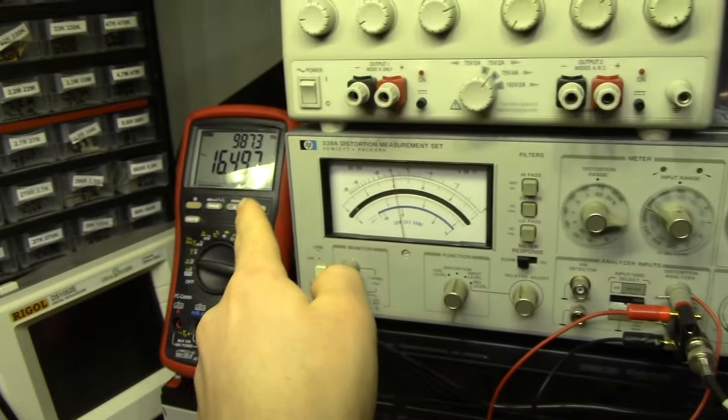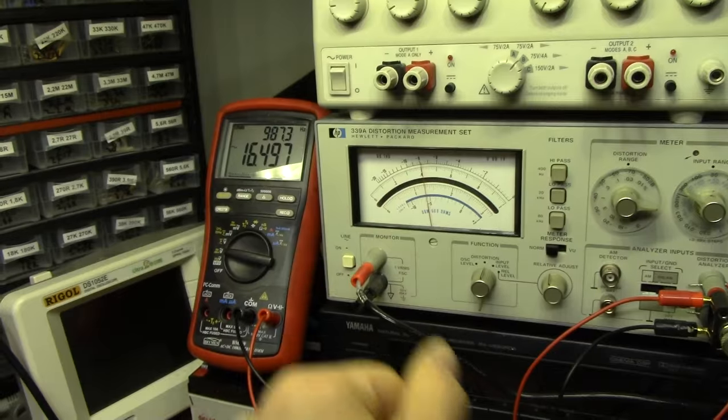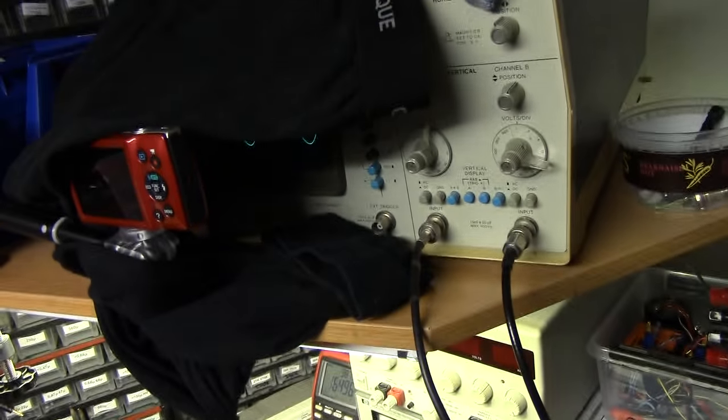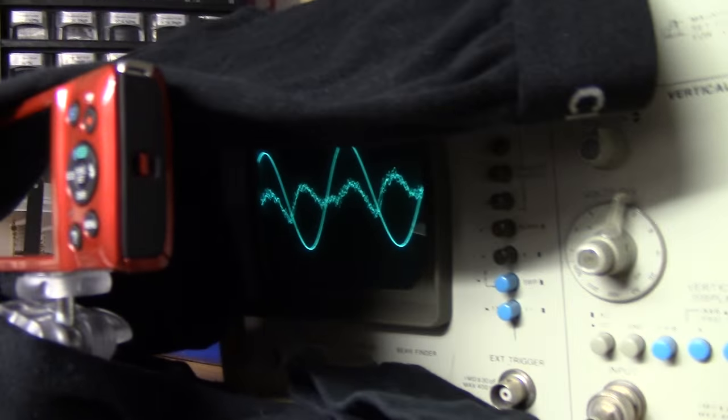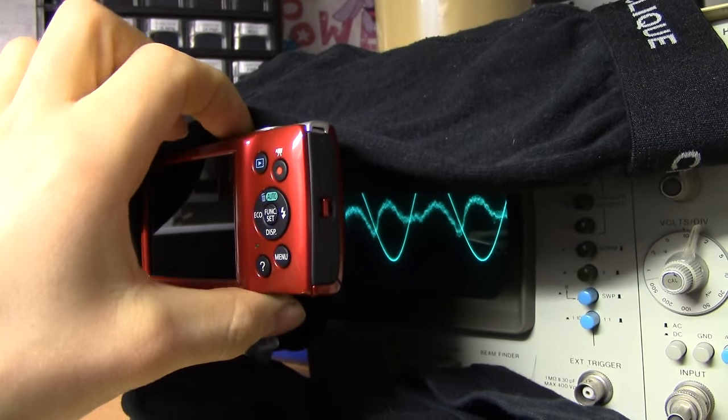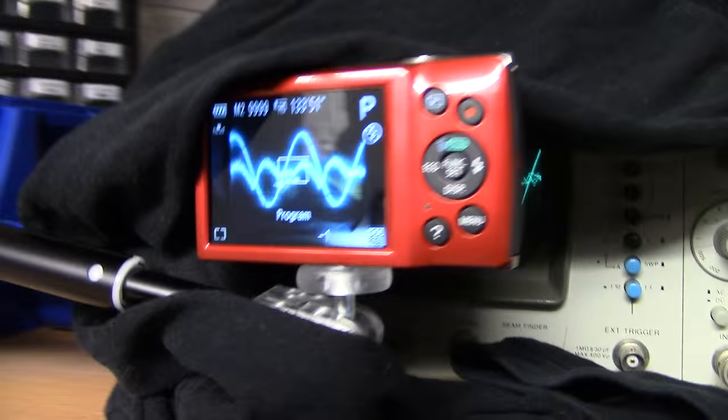So we've also got a primer meter there, measuring the output voltage of the amplifier, which we can use to calculate the output power, and up here we've got a monitoring oscilloscope with a camera set up to look at it.